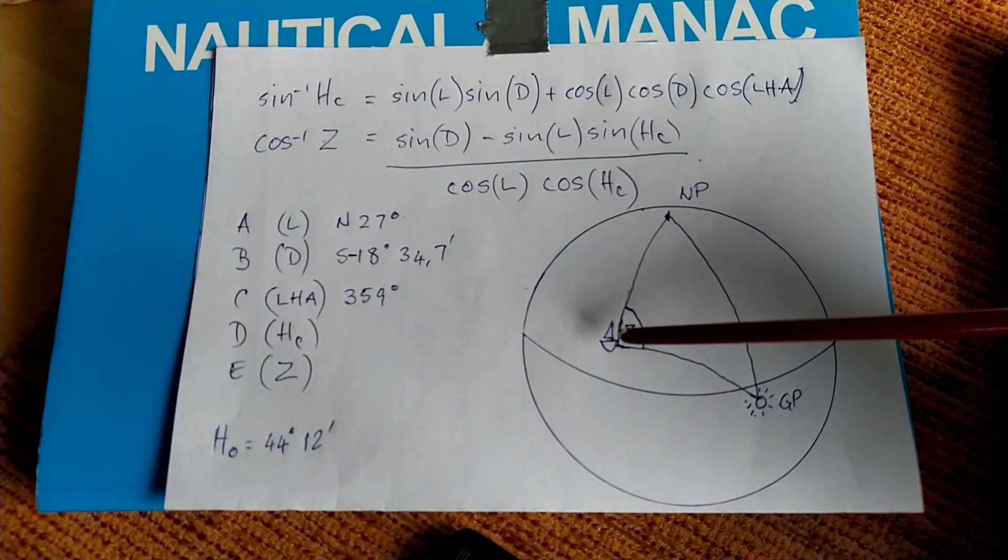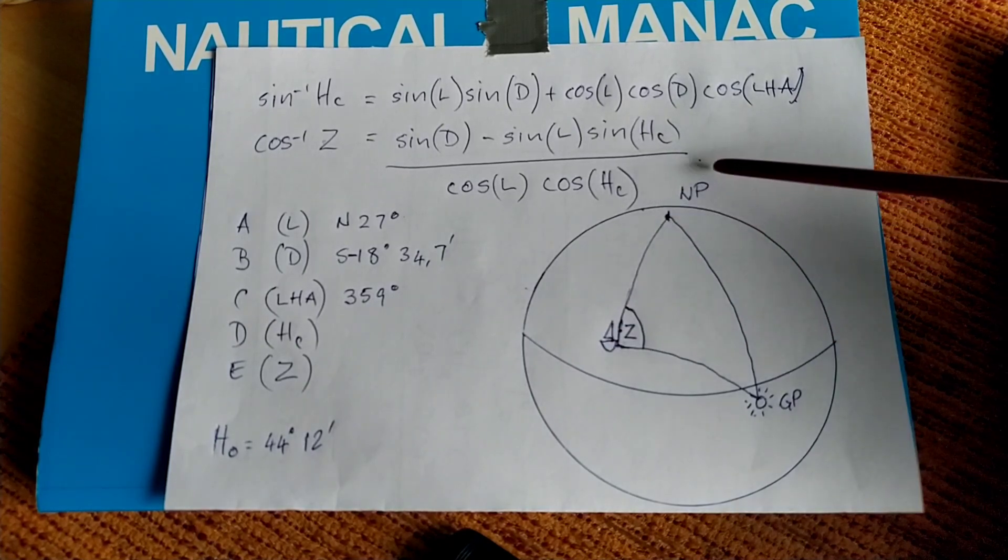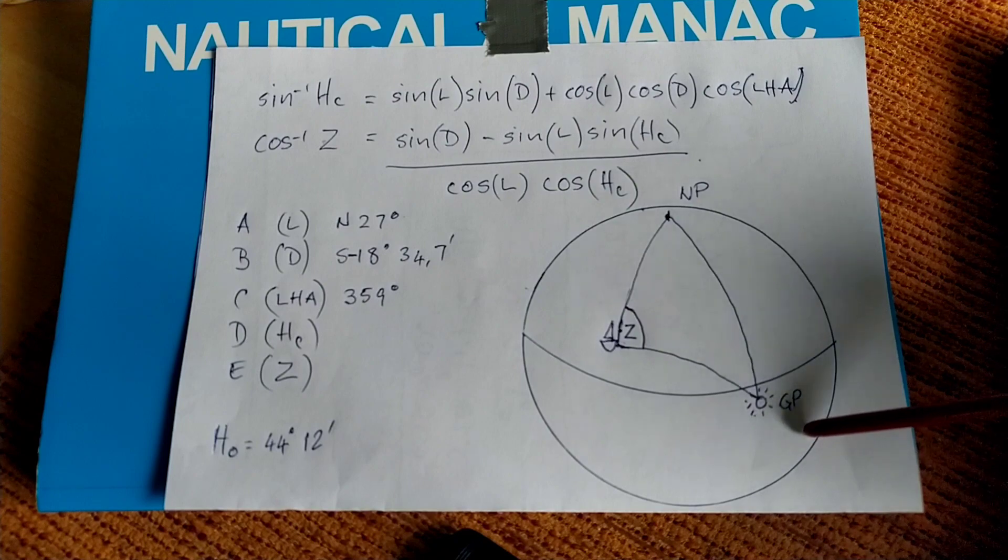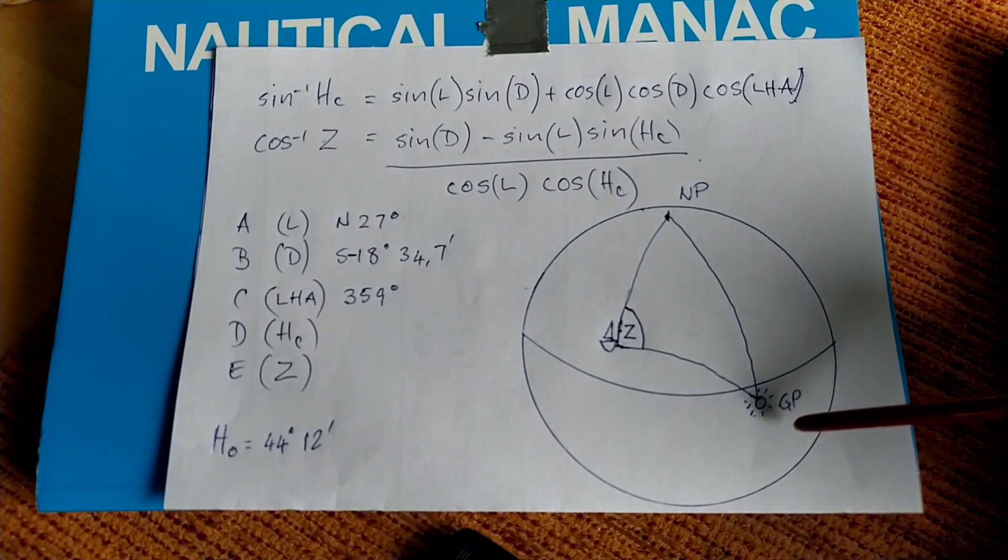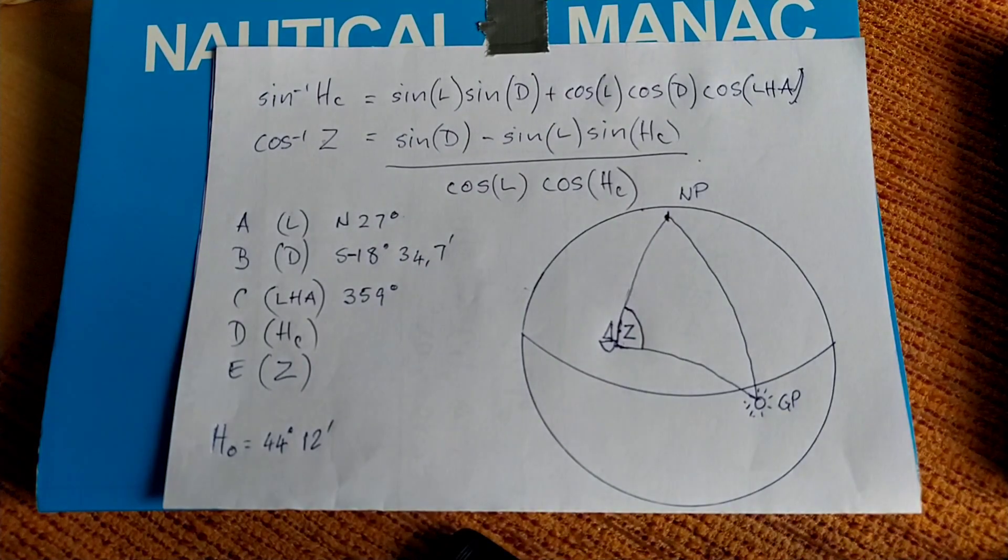Here's our triangle made up of the dead reckoned position of the observer, the elevated pole, which in this case is the north pole because the observer is in the northern hemisphere, and then we have our GP. In our example the GP is in the southern hemisphere, that means we have a contrary name declination, that's important, it's something we're going to have to keep in mind later when we start entering the numbers.